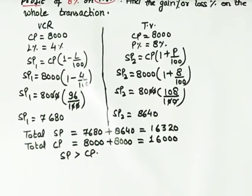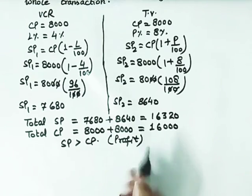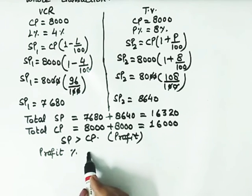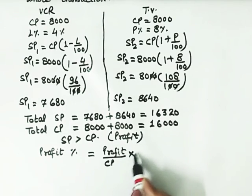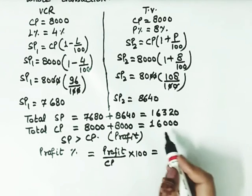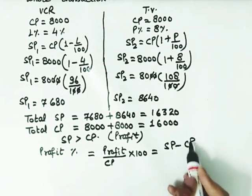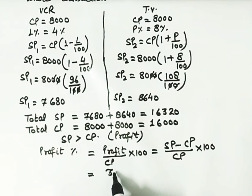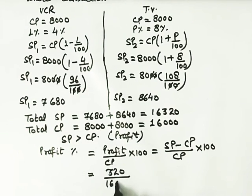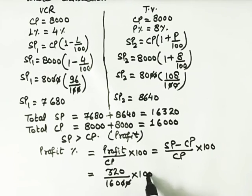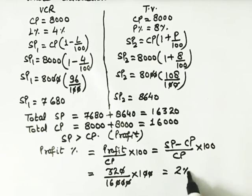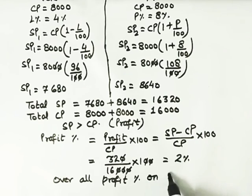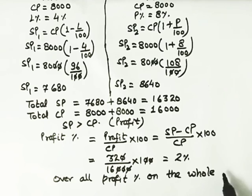That means whenever SP is greater than CP, what happens? There is a profit. So we need to find profit percent, we need to find overall profit percent. The formula for profit percent is profit upon CP into 100. What is our profit? We need to find it from here. Profit is SP minus CP. I'll write it here: SP minus CP by CP into 100. What is our profit? If we subtract CP from SP, we get 320 by CP which is 16,000 into 100. Cancel zeros. 32 by 16 equals 2. So overall profit percent on the whole transaction is 2%.